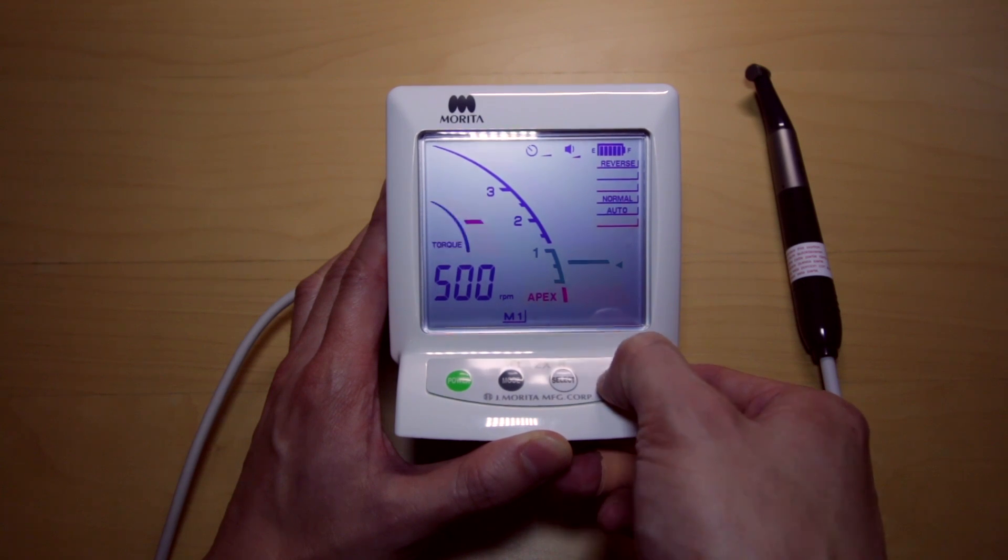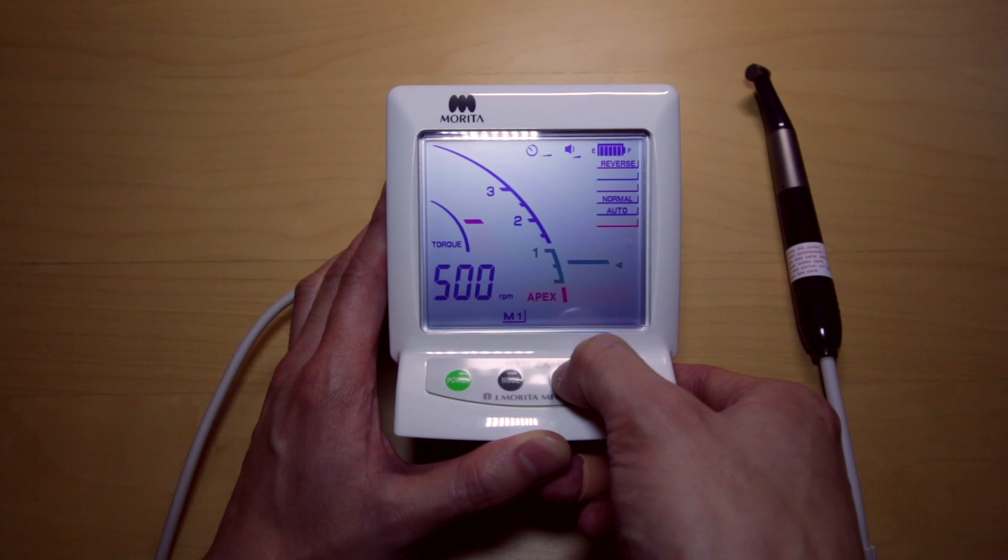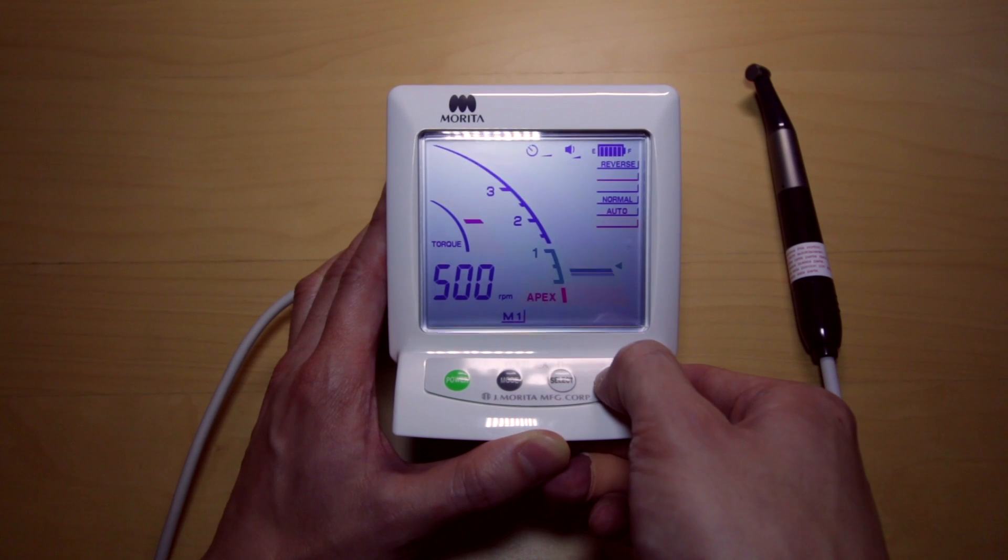The great thing about this device is you can use them separately, but if you want to use the apex location and the rotary at the same time, I would recommend lower torque levels, shorter apex values, along with slower RPMs.